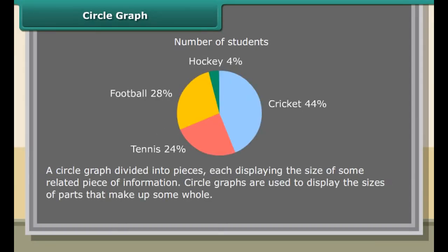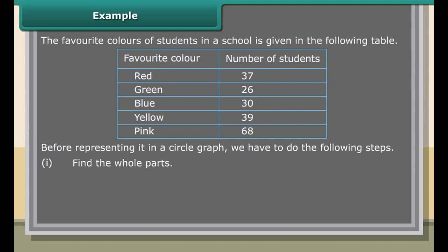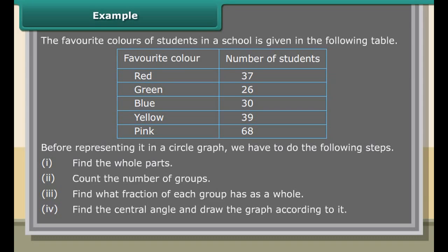Histogram: A histogram is graphic representation of the frequency distribution of a continuous variable. Rectangles are drawn in such a way that their bases lie on a linear scale representing different intervals, and their heights are proportional to the frequency of the values within each interval. Given below is a frequency table and the corresponding histogram showing the number of employees in a particular factory according to their income.